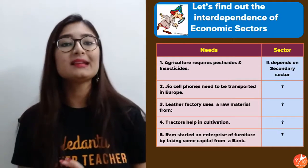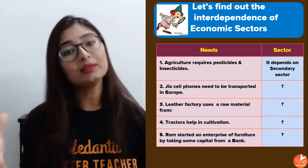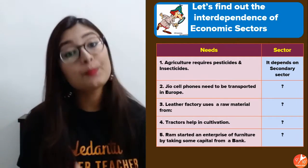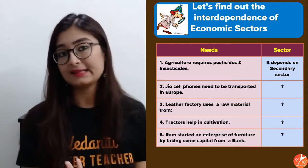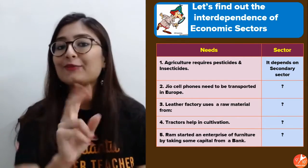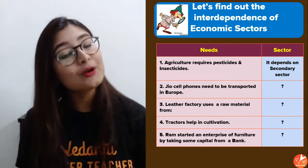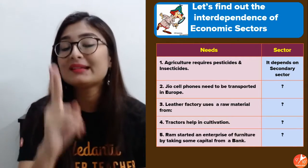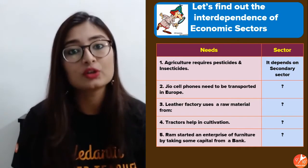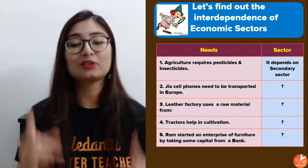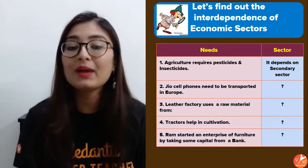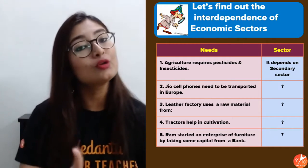Now let's see how these economic sectors are interdependent. In order to run the economy, all sectors work simultaneously and are interrelated. For example, agriculture (primary sector) requires pesticides and insecticides, which are manufactured goods — so the primary sector depends on the secondary sector for those. Similarly, goods need transportation, which is a service — that's your homework: identify which sector fulfills which need from the remaining examples given.